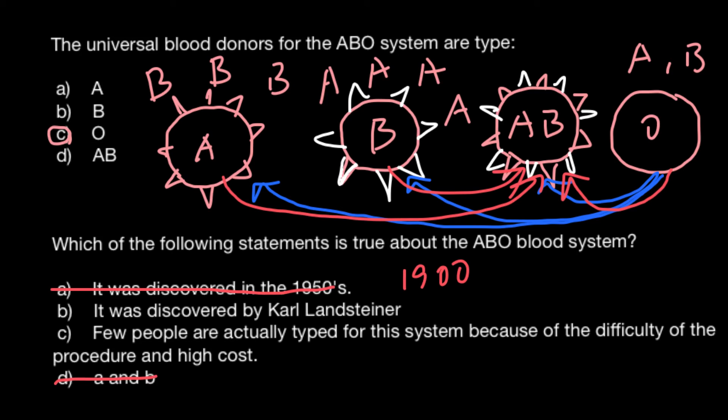People often get caught by combined answers like that — they see one answer might be correct and aren't sure about the other, so they choose the combined option. But that's not the case here. We are left with two answers: B — it was discovered by Karl Landsteiner — and C — few people are actually typed for this system because of the difficulty of the procedure and higher cost.